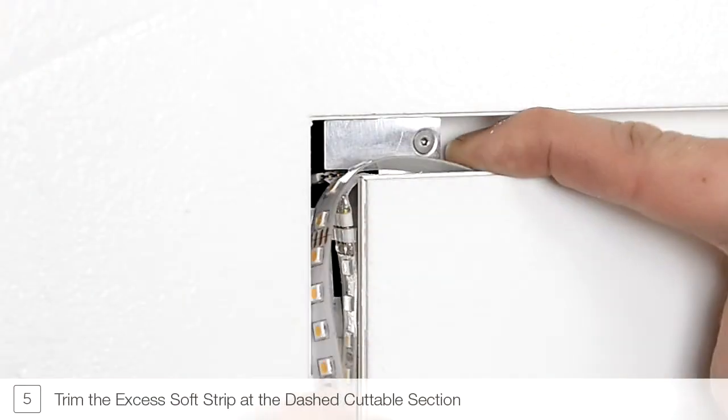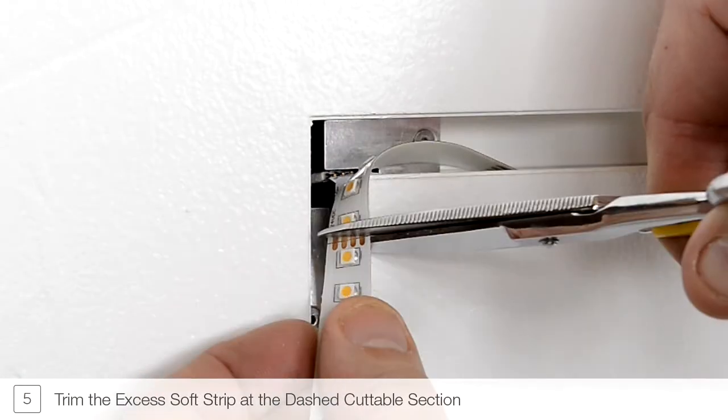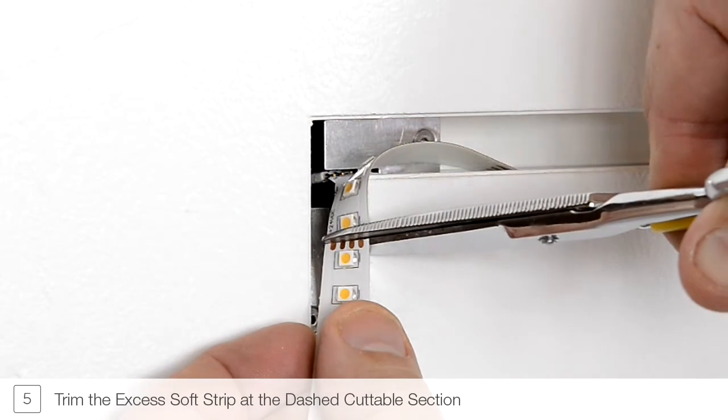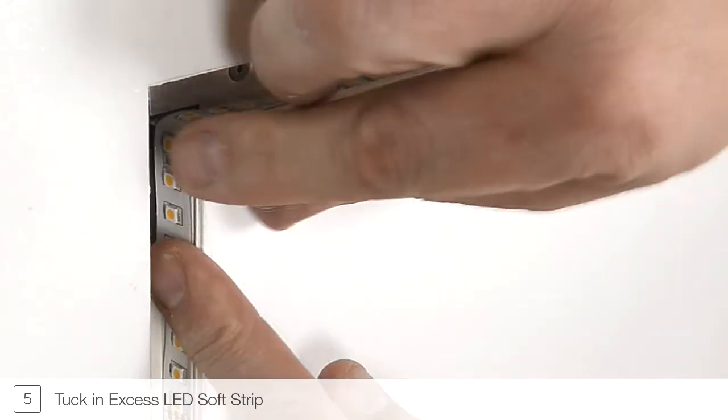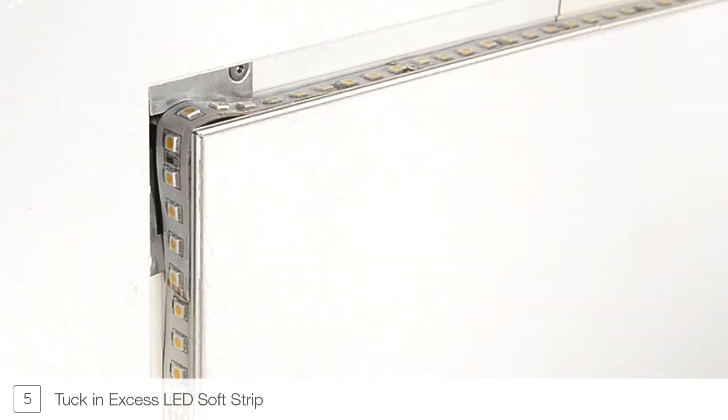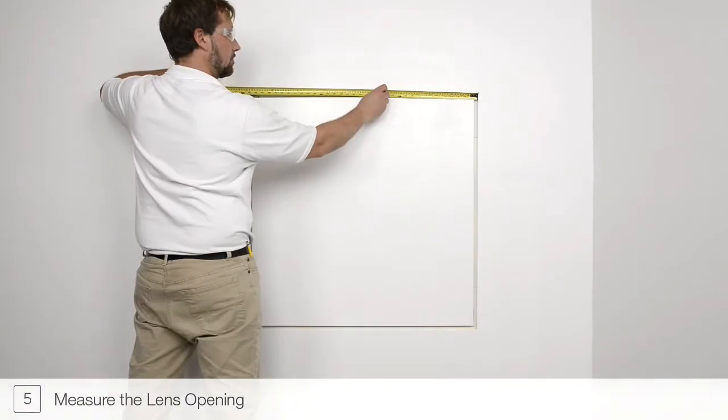Trim any excess soft strip along the dashed cutting lines. It is important to only trim the strip at these lines. Ensure LED strip overlays the flexible power connector to avoid dark spots. Measure the lens opening lengths of the picture frame installation.